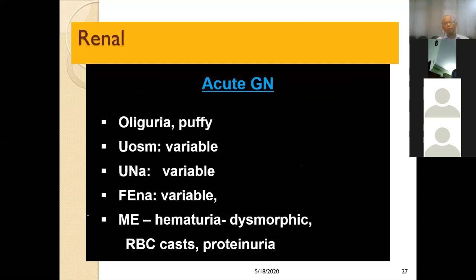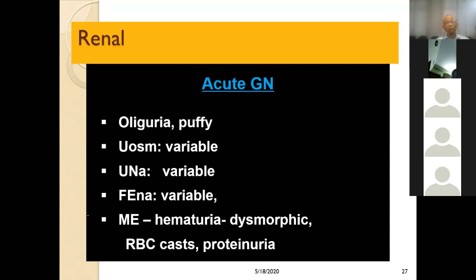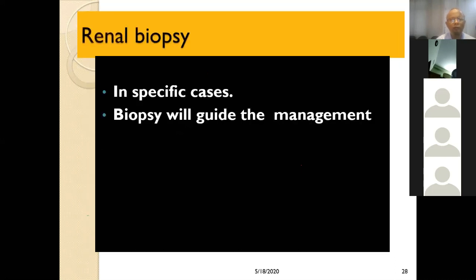In acute glomerulonephritis, common in children after post-streptococcal glomerulonephritis, the patient presents with puffy face. Urinary osmolality, sodium, and fractional sodium are all variable. On microscopy you will find hematuria with dysmorphic RBCs — these take the shape of the tubule — along with RBC casts and proteinuria. Proteinuria is mild here but more marked in nephrotic syndrome. Renal biopsy is usually not required in acute glomerulonephritis, but in some conditions biopsy can guide management.